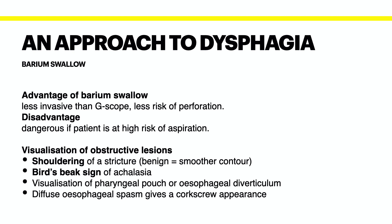However, if the patient is at high risk of aspiration, a barium swallow can be dangerous. Barium swallows allow for visualization of obstructive lesions. An important feature to look for is the shouldering of a stricture — benign strictures typically have a smoother contour, whereas malignant strictures form a more right-angled contour. You might also see a bird's beak sign of achalasia lower down, where the tight lower esophageal sphincter causes a very sharp narrowing of the lumen. You might also see a pharyngeal pouch or esophageal diverticulum, and diffuse esophageal spasm gives a corkscrew appearance on barium swallow.